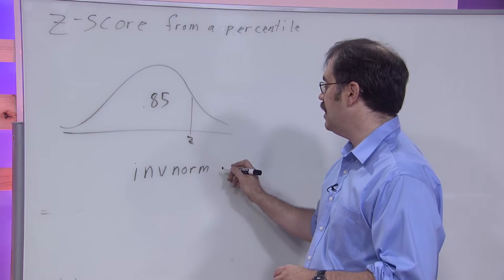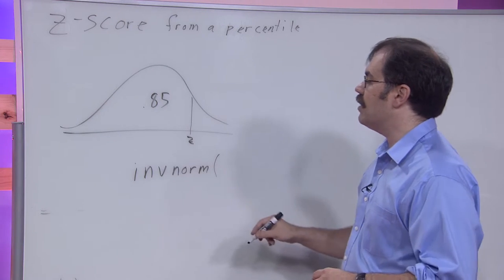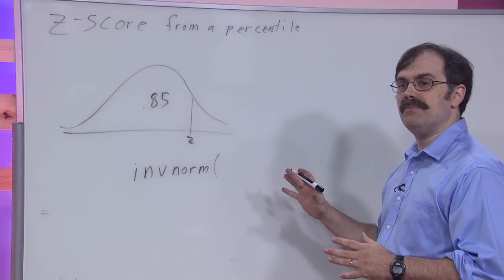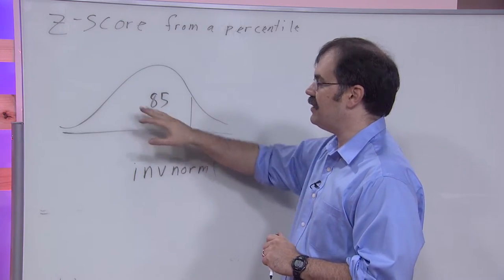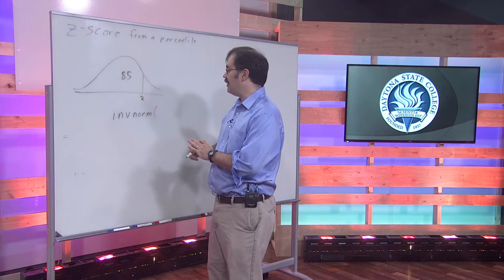But INVNORM basically takes an area that's to the left of some z-value and calculates a z-value for you.